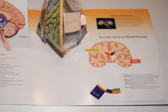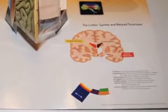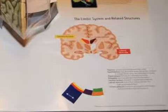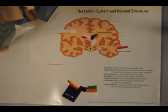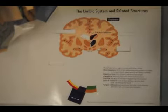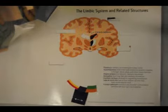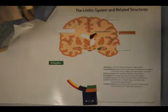A third cross-section view of the limbic system and related structures helps students understand how limbic system structures are situated on both sides of the brain's two hemispheres. Turning a wheel highlights the color-coded labels and locations for structures and allows students to test themselves.